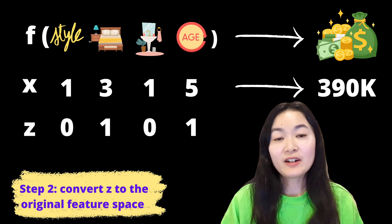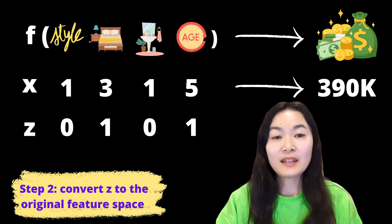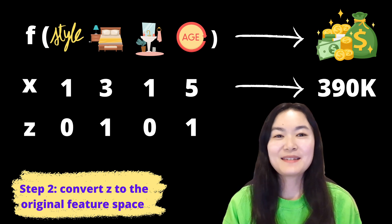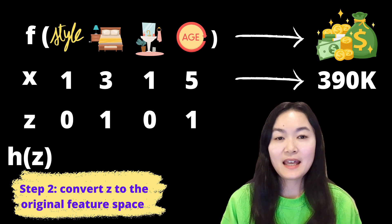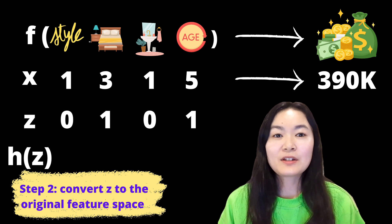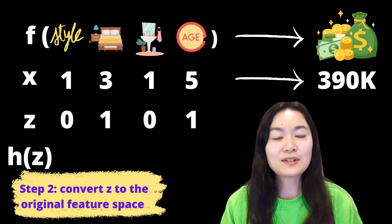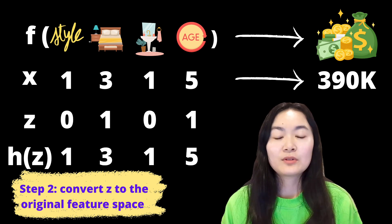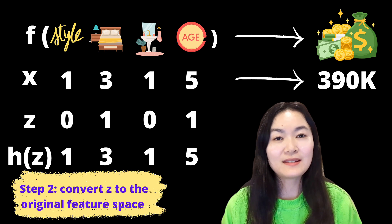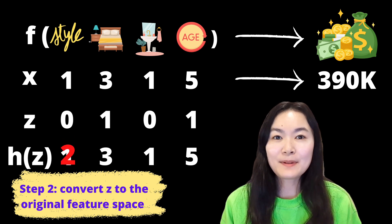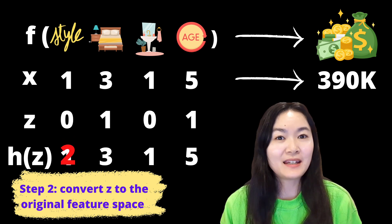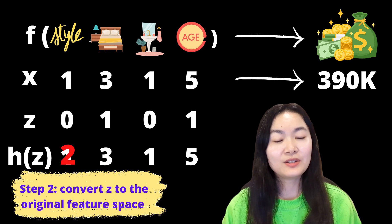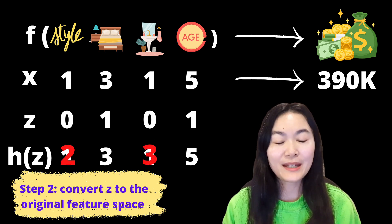Step 2 is to convert Z to the original feature space. Let's call this new instance HZ and copy the values from X. Whenever Z is 0, we replace the corresponding HZ values with a randomly sampled value from the data. Here, we replace 1 with 2 and replace the second one with 3.